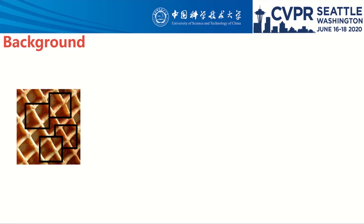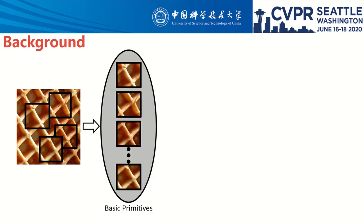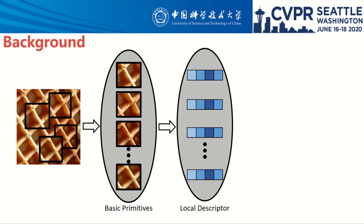Texture refers to the spatial organization of a set of basic primitives or textons. Therefore, a texture region usually conforms to some statistical properties, except in periodically recurrent textons. Some methods exploit this statistical property and incorporate an orderless component to obtain a global compact feature representation.